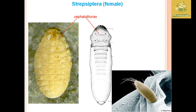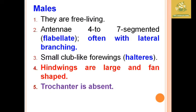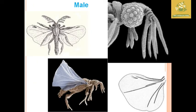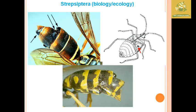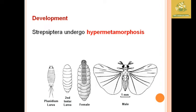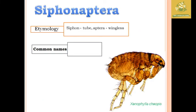The pictures of Strepsiptera show the female and the cephalothorax present on the grubs. The male is free-living. The antennae are four-to-seven segmented, flabellate, and often with lateral branching. Males have small club-like forewings called halteres, while the hindwings are large and fan-shaped. The trochanter is absent in males. Strepsiptera undergo hypermetamorphosis, having more than four developmental stages.